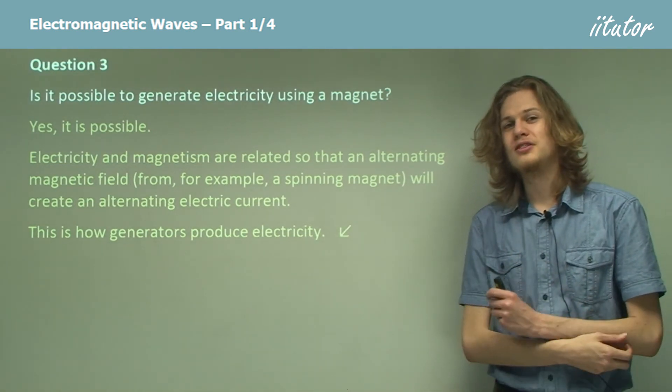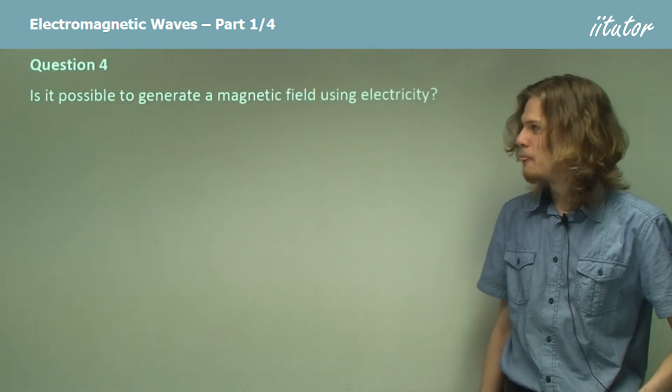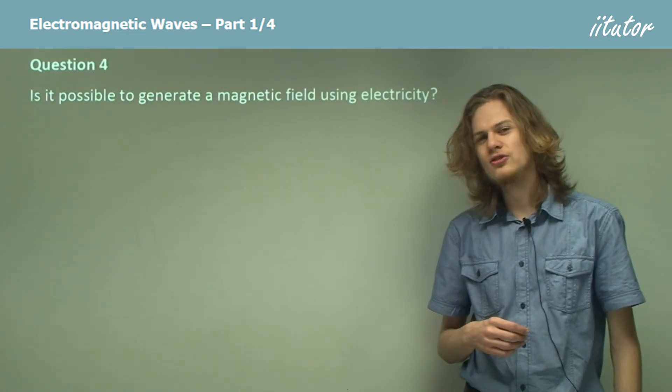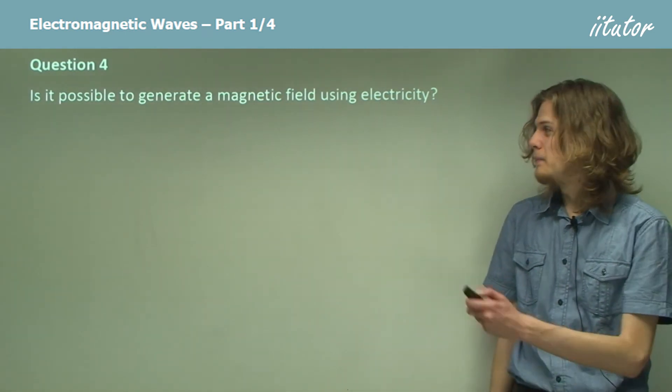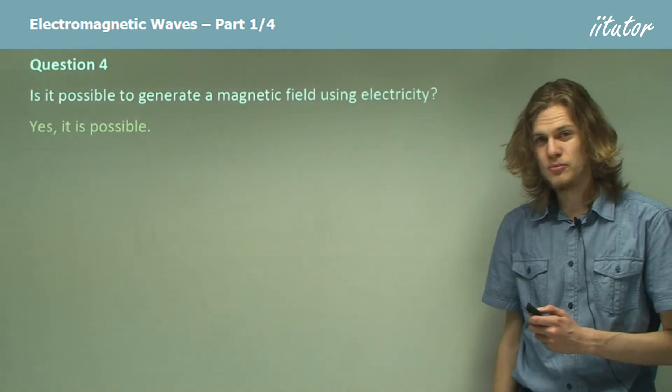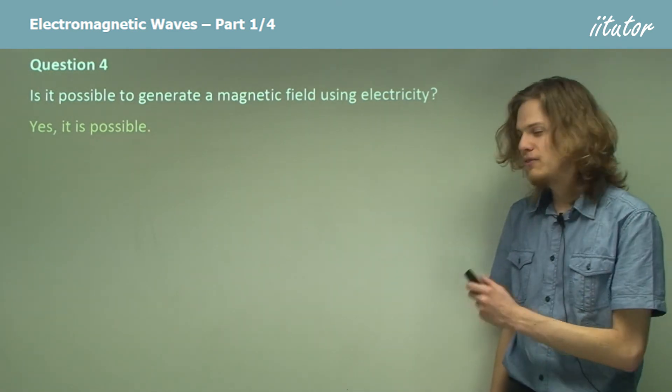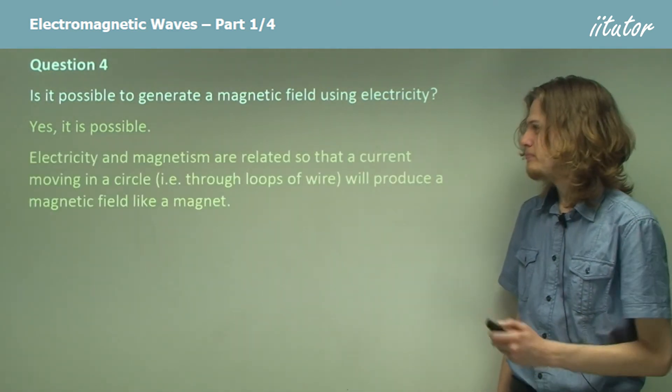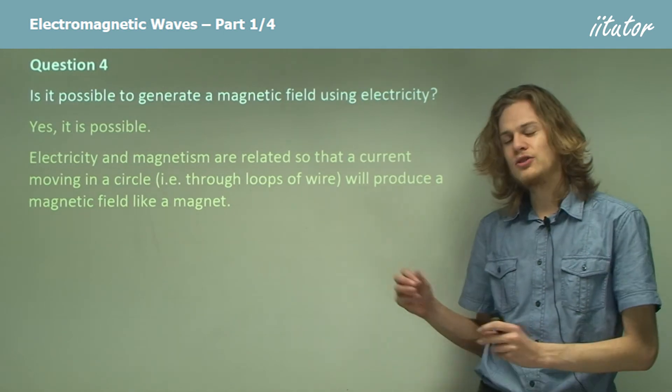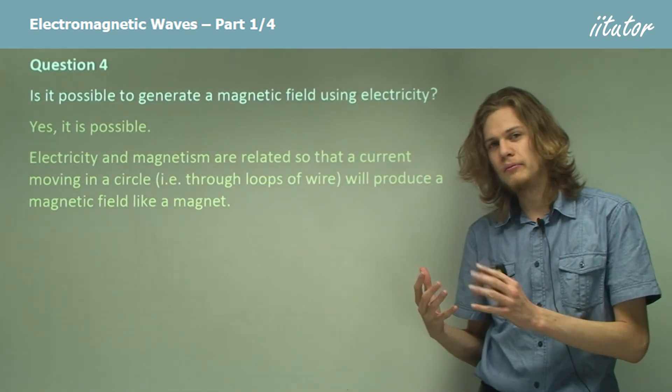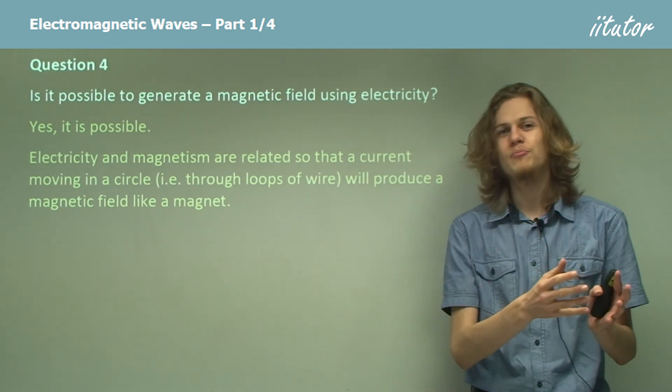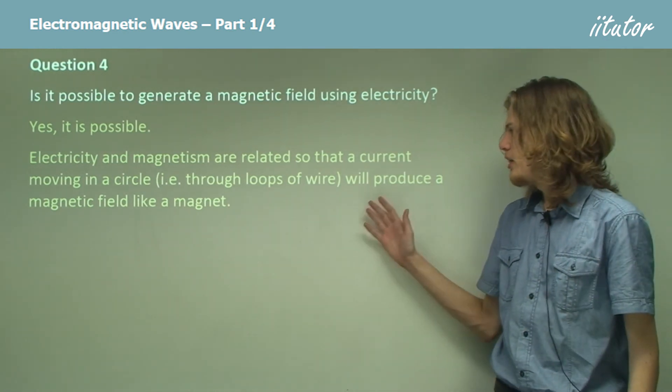A similar question: is it possible to generate a magnetic field using electricity? And as I'm sure you've guessed, the answer once again is yes. I'll just give you a brief explanation. It turns out that a current moving in a circle, for example loops of wire or a coil of wire twisted around a piece of metal like a nail, will produce a magnetic field like a magnet.